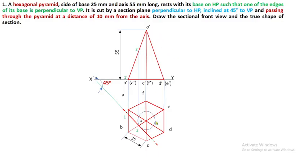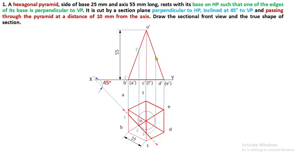Next, slant edge OC is cut at point 3. Since OC is perpendicular to the plane XY, we cannot directly identify its height in the front view. Mark O as center and point 3 as radius, draw an arc to the outermost slant edge O dash D dash. From OD in the top view, extend the projector to touch O dash D dash, then shift this point to O dash C dash by drawing a projector parallel to XY — this gives 3 dash. For edge CD, it is cut at point 4; extend the projector to C dash D dash in the front view and mark it as 4 dash.